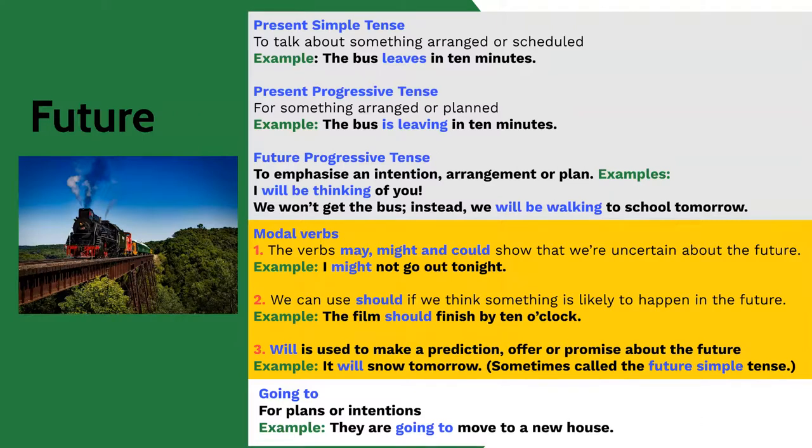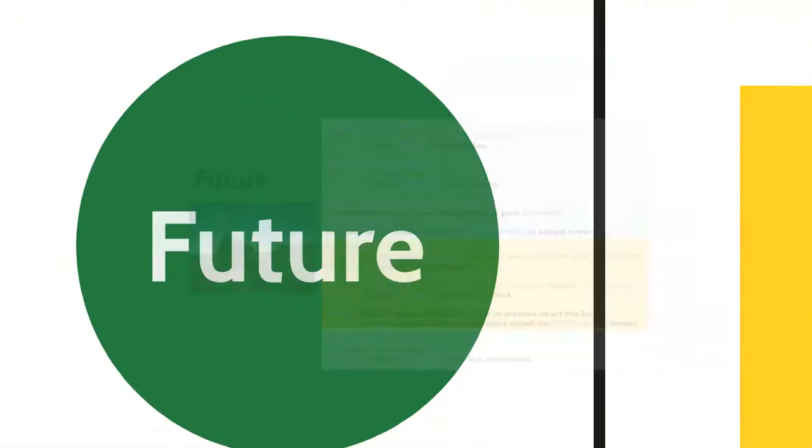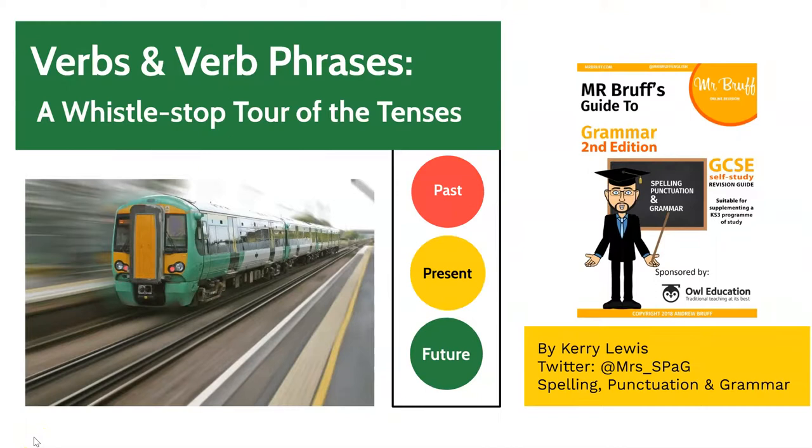Finally, we have going to to talk about plans or intentions. For example, they're going to move to a new house. It's quite interesting to see how the verbs and verb phrases reveal a range of ideas and attitudes towards time. If you're interested in exploring verbs and verb phrases in more detail, I've made separate videos and put the links in the description below. In the meantime, this is the end of our whistle-stop tour of the tenses.